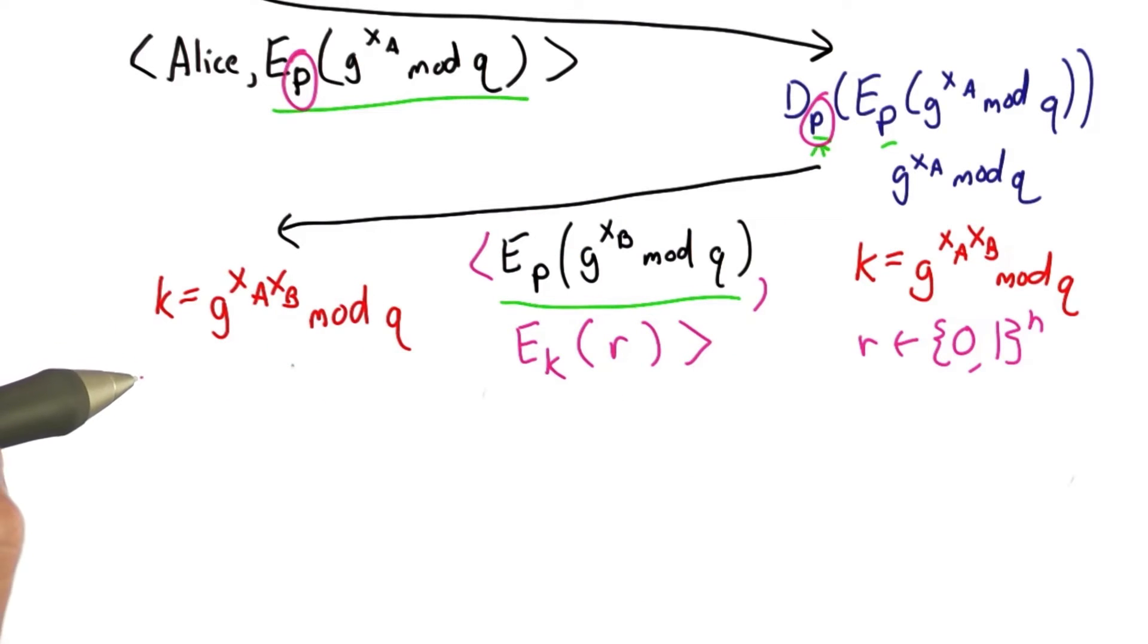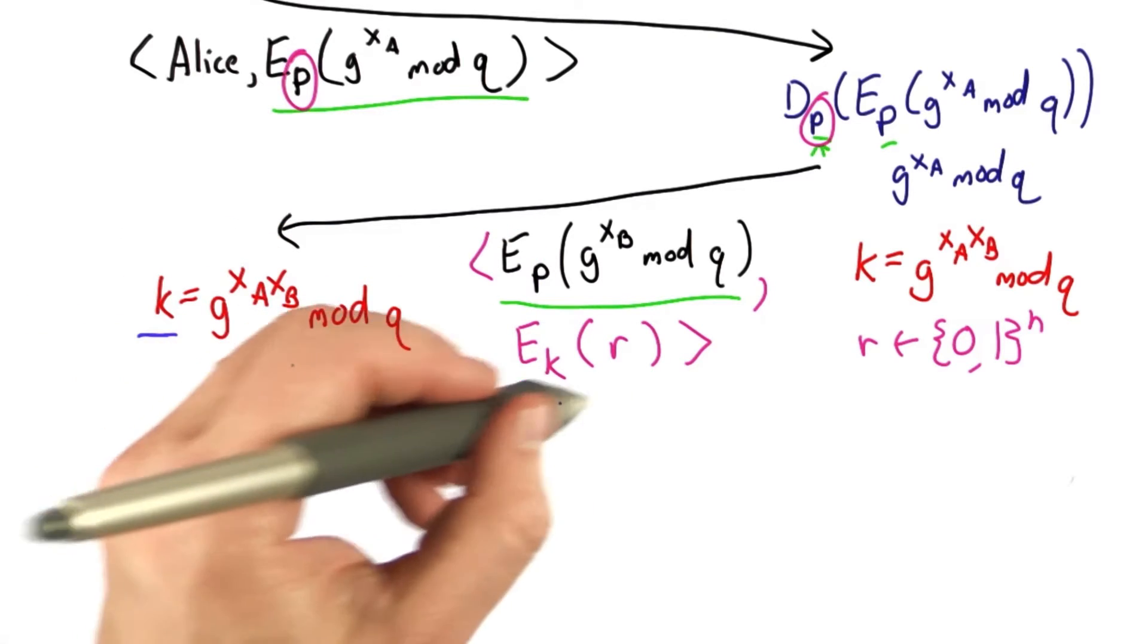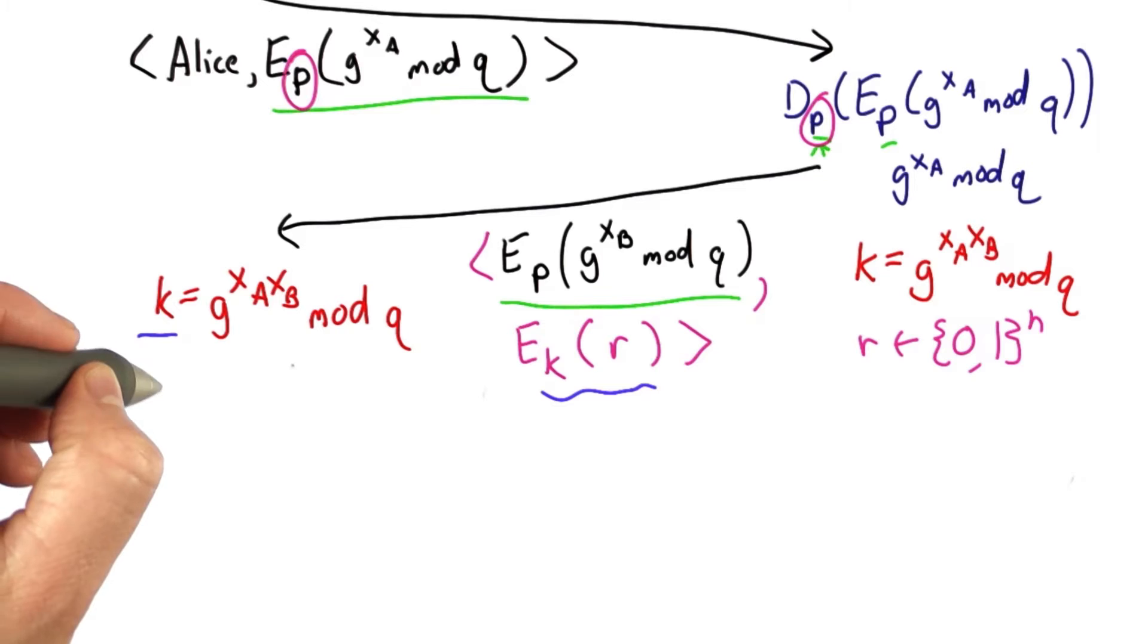And now Alice needs to be able to obtain the right key. That proves that she knew the password, and using that key, she can decrypt this message and obtain R.